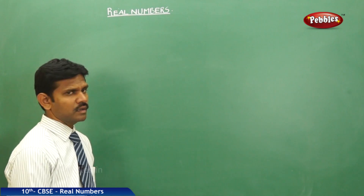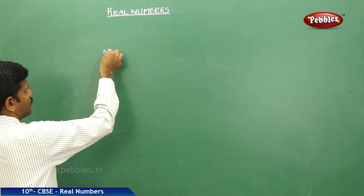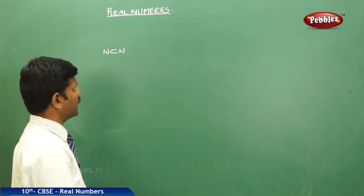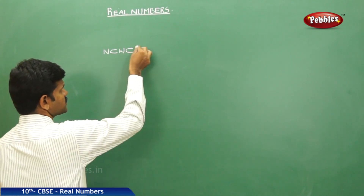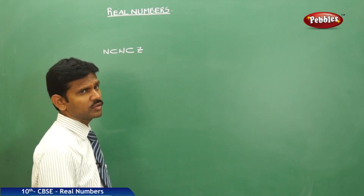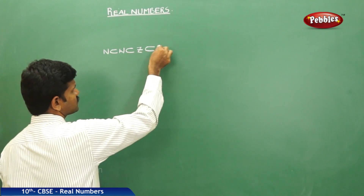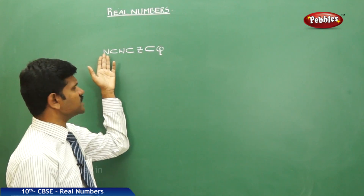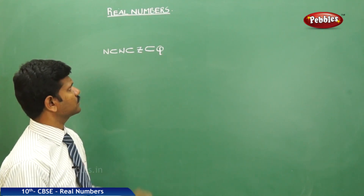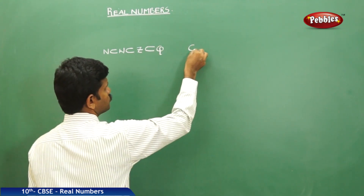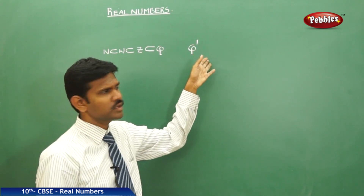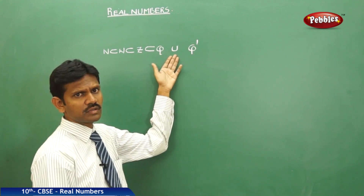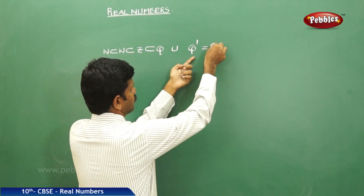From our previous knowledge, we can establish that all natural numbers are whole numbers — natural numbers is a subset of whole numbers. All whole numbers are integers — whole numbers is a subset of integers. And all integers are a subset of the rational numbers. Q and Q dash are quite different from each other. If you combine rational numbers union irrational numbers, you will get real numbers.